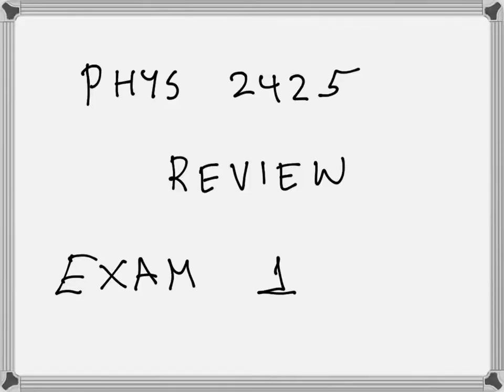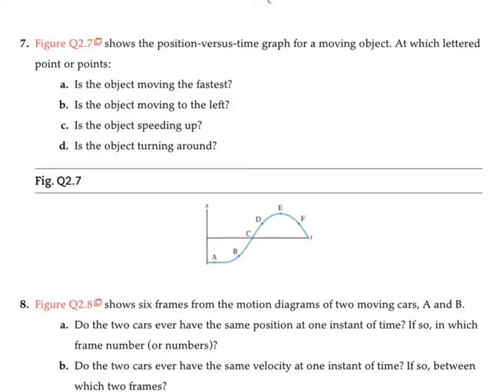In this video I want to do a review of some of the concepts and ideas that we cover for exam number one. Let's get started with kinematics in one dimension, which is chapter two. This question is from your textbook — question number seven in chapter two. The figure shows a position versus time graph for a moving object. The first question is: at which point is the object moving the fastest?